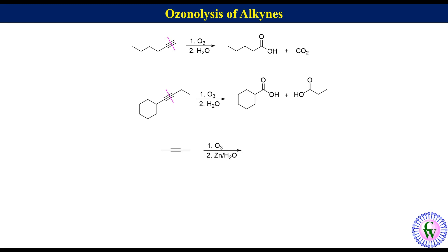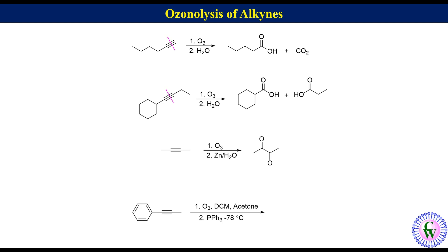Ozonolysis of 2-butyne involving reductive workup. Here we can see that there is the use of zinc, so the workup is reductive. In such conditions, to draw the product, convert the triple bond to a single bond and then connect the alkyne carbons with oxygen through a double bond. Removal of the triple bond from the reactant gives the four-carbon chain; since C2 and C3 are the alkyne carbons, connect C2 and C3 with oxygen atoms through a double bond to get butane-2,3-dione.